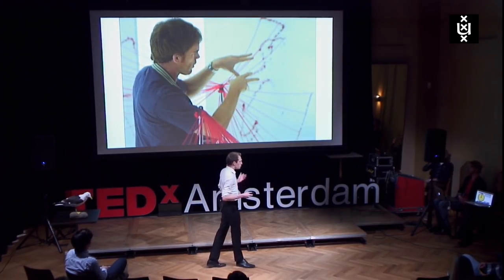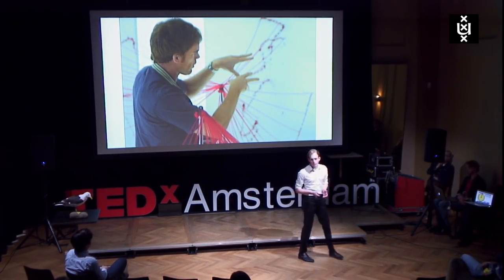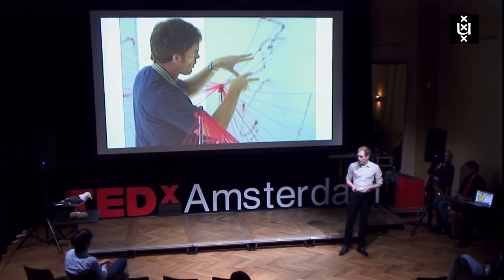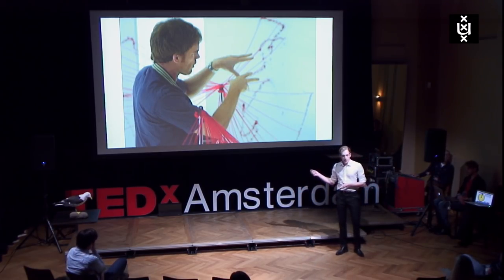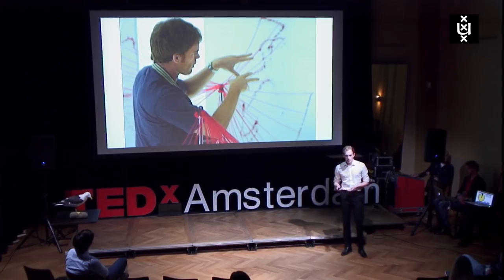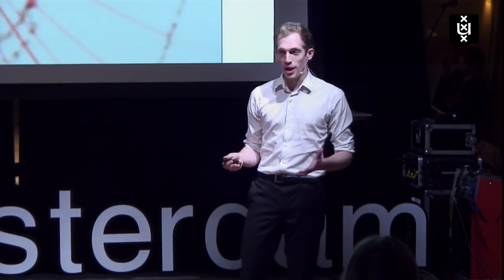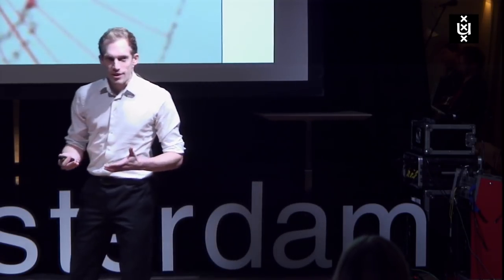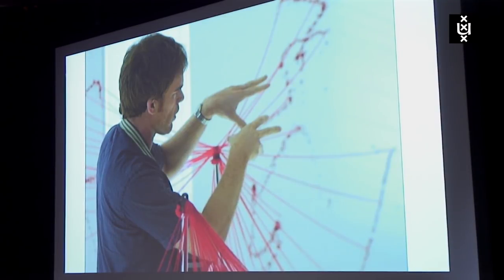First, I want to point your attention to our favorite dark hero and bloodstain pattern analyst, Dexter. Right here, right now, he's on a crime scene investigating what has happened, and for that he's using the so-called stringing method. He has all these strings coming together to determine where the victim was when the crime happened. This is not reality, too bad. But as we look at the picture, all the strings come together very neatly in one single point. Well, in reality, this is not the case.